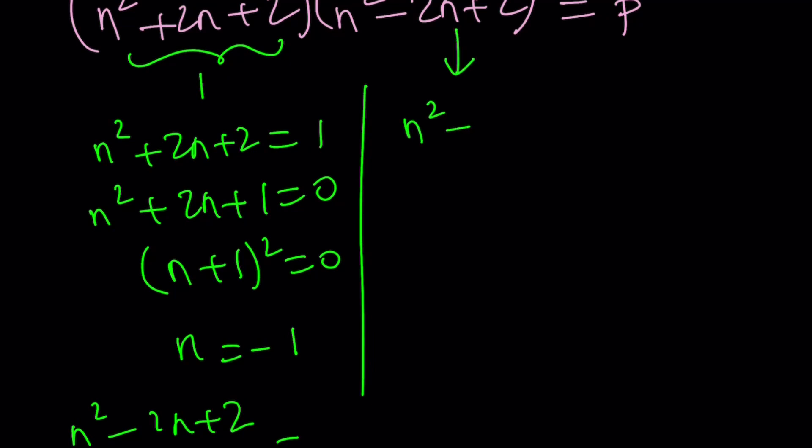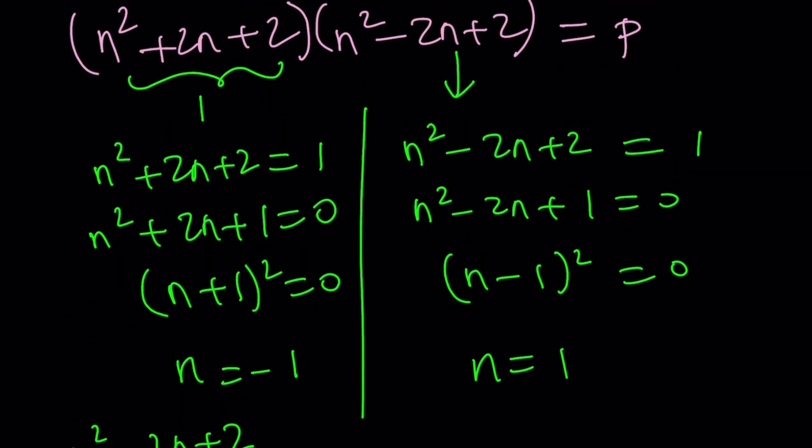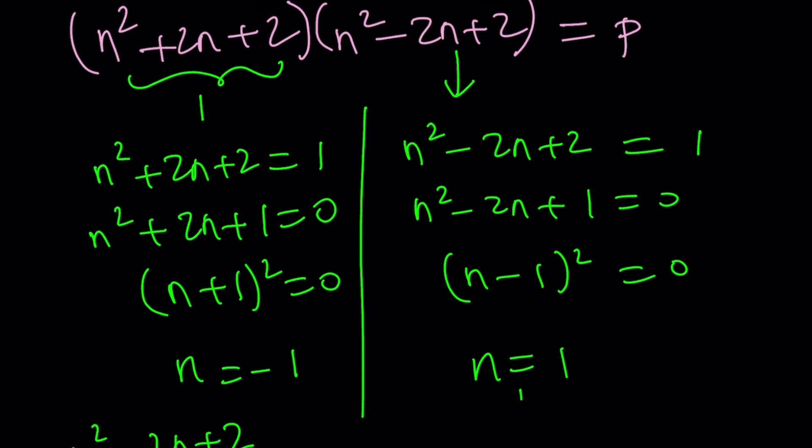How about the other case? n squared minus 2n plus 2 equals 1. In that case, we get n squared minus 2n plus 1 equals 0. So this is n minus 1 quantity squared equals 0, which means n equals 1. And when you plug in n equals 1 into the other equation, you're going to get p equals 5 again. So in both cases, you get p equals 5.